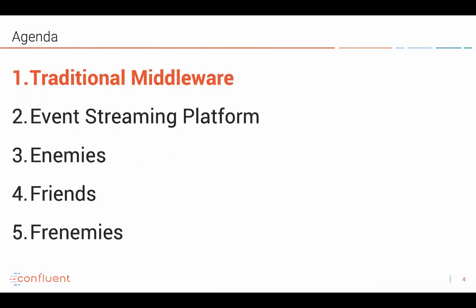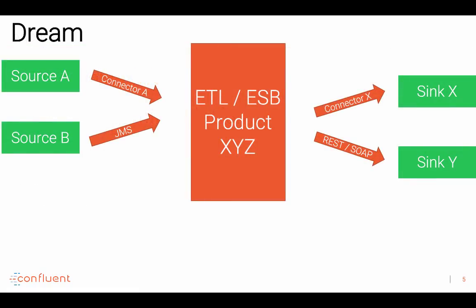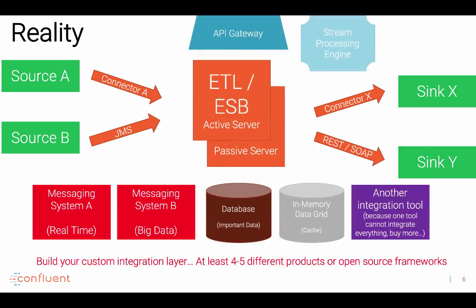Let's think about traditional middleware first. When you buy a new product or download an open source tool for classical middleware, you have different sources which you want to integrate via connectors or standards like JMS, then you integrate with the integration tool, and then use other connectors or standards like REST or SOAP to send data. In practice it looks different. If you want to use an integration layer, you typically have to use many different components. Whether it's proprietary software from a vendor or open source Apache projects, you typically see a complex setup.